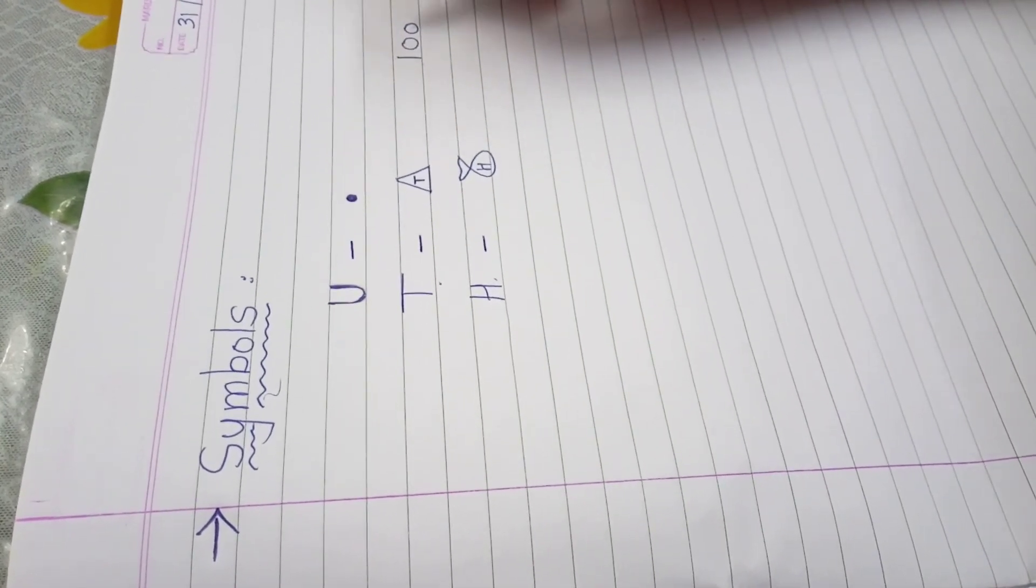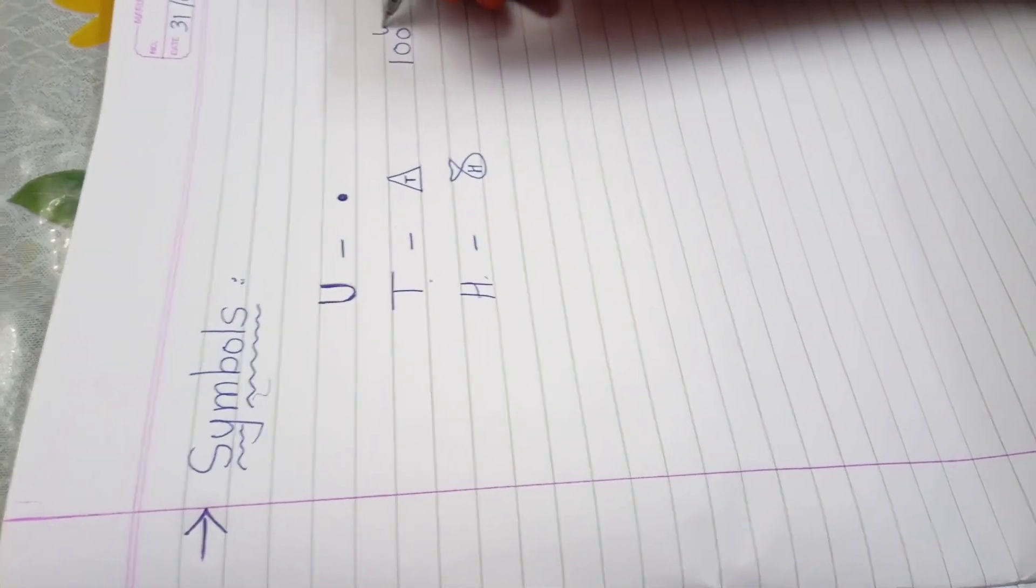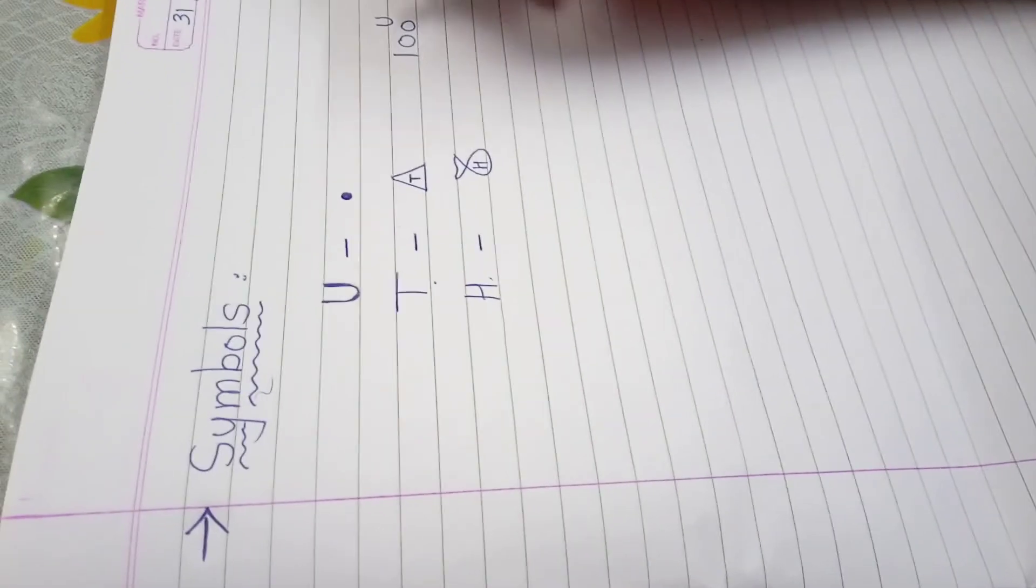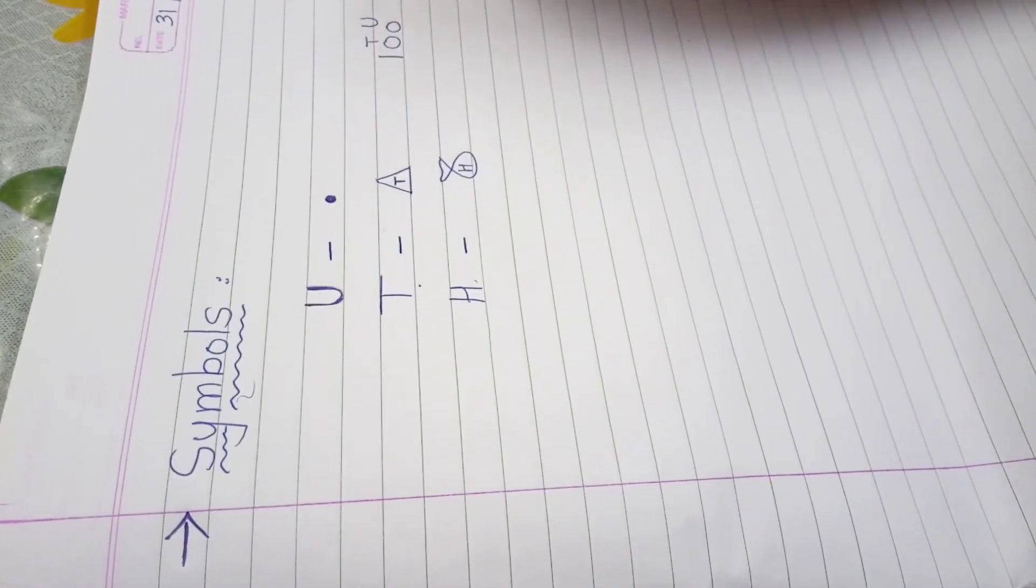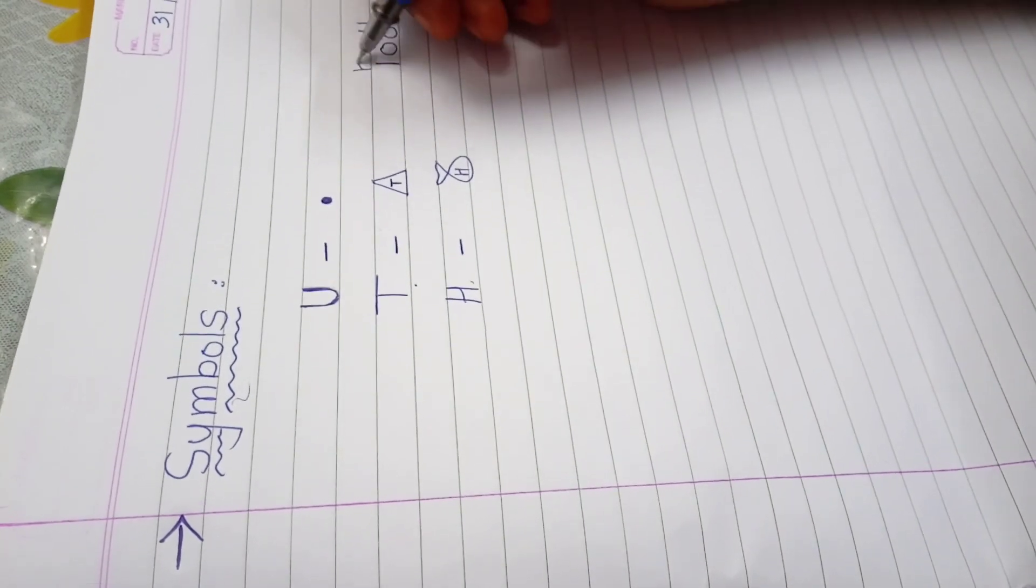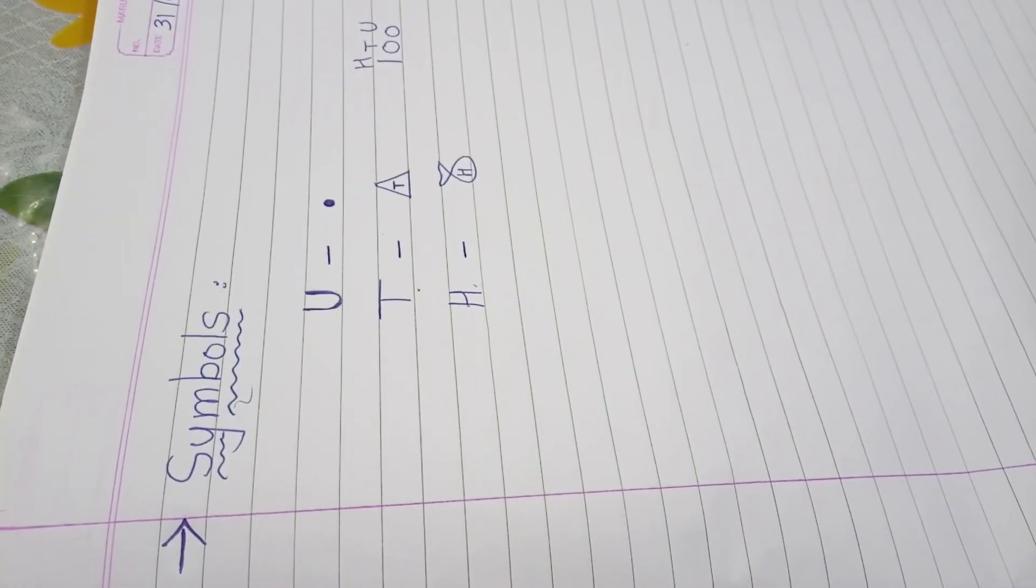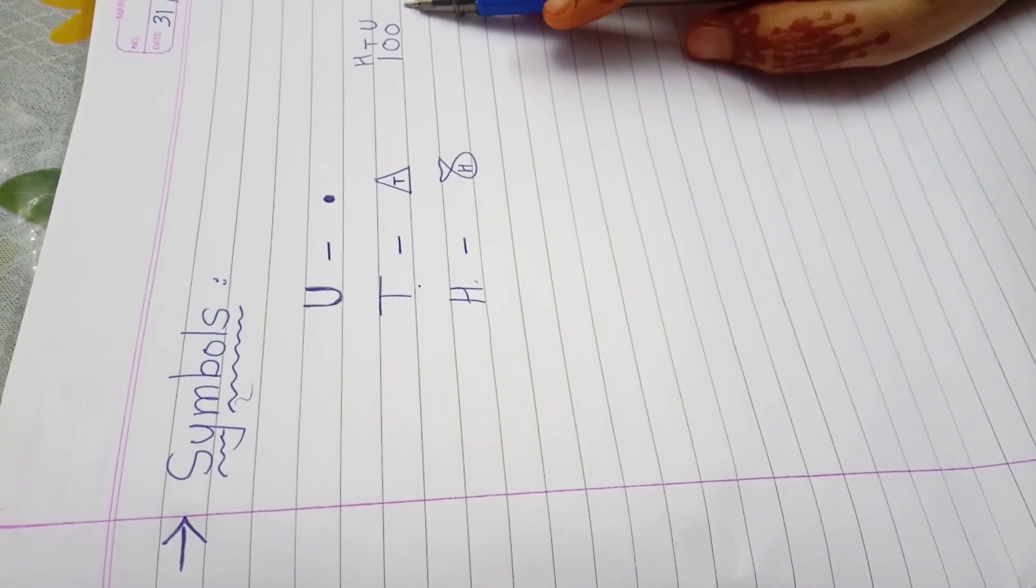So this one is first digit. So it is on unit place, then it is on tens place and this one is on 100 place. Okay. Then how we will read? 100. Okay.